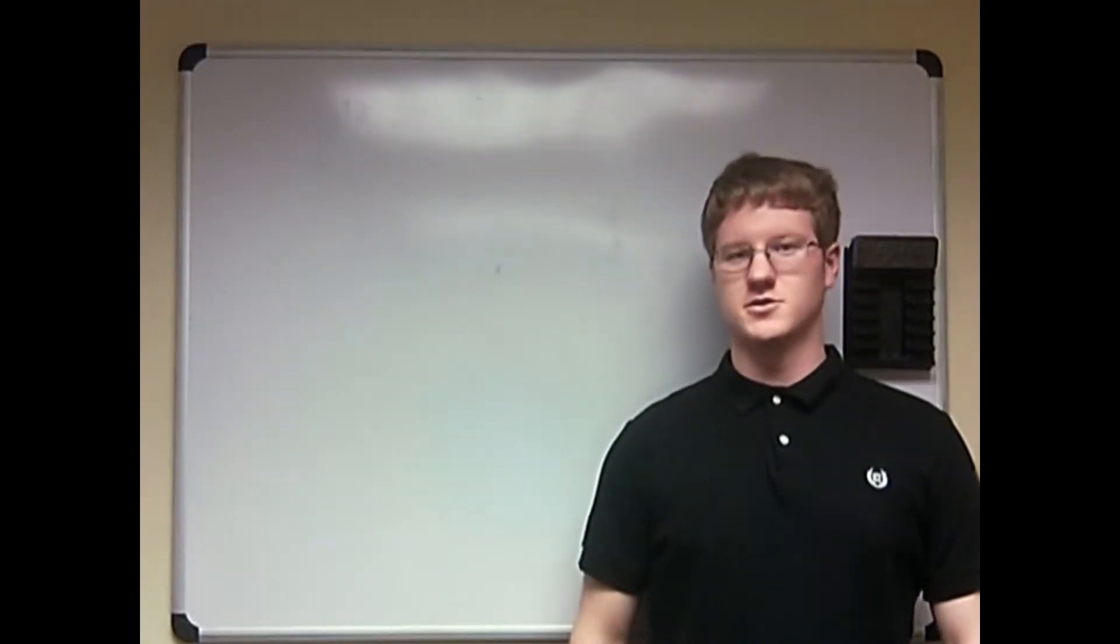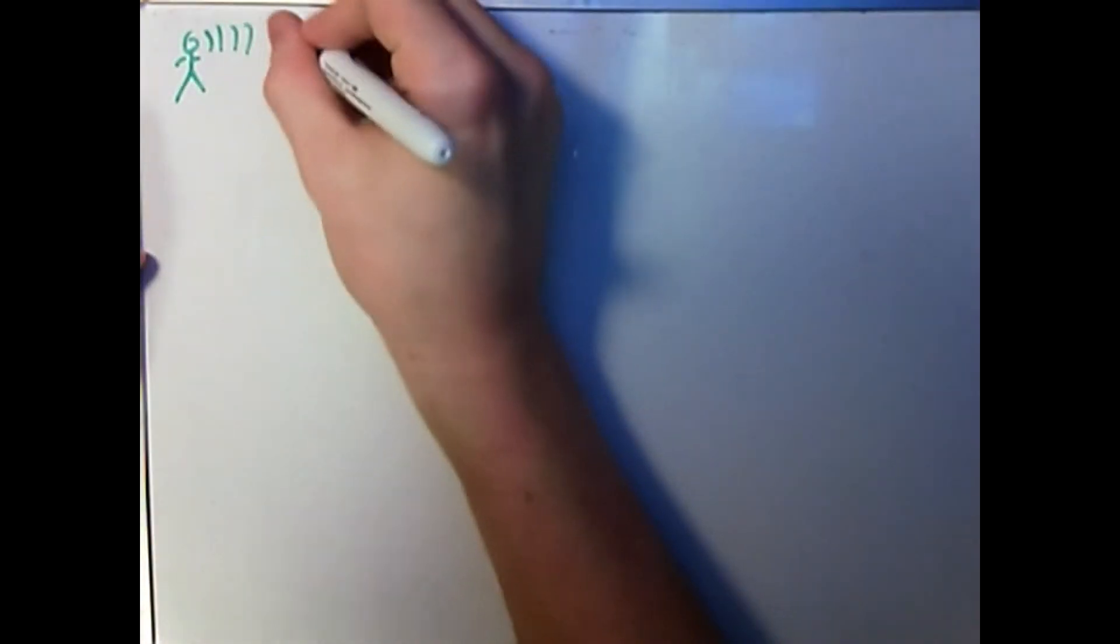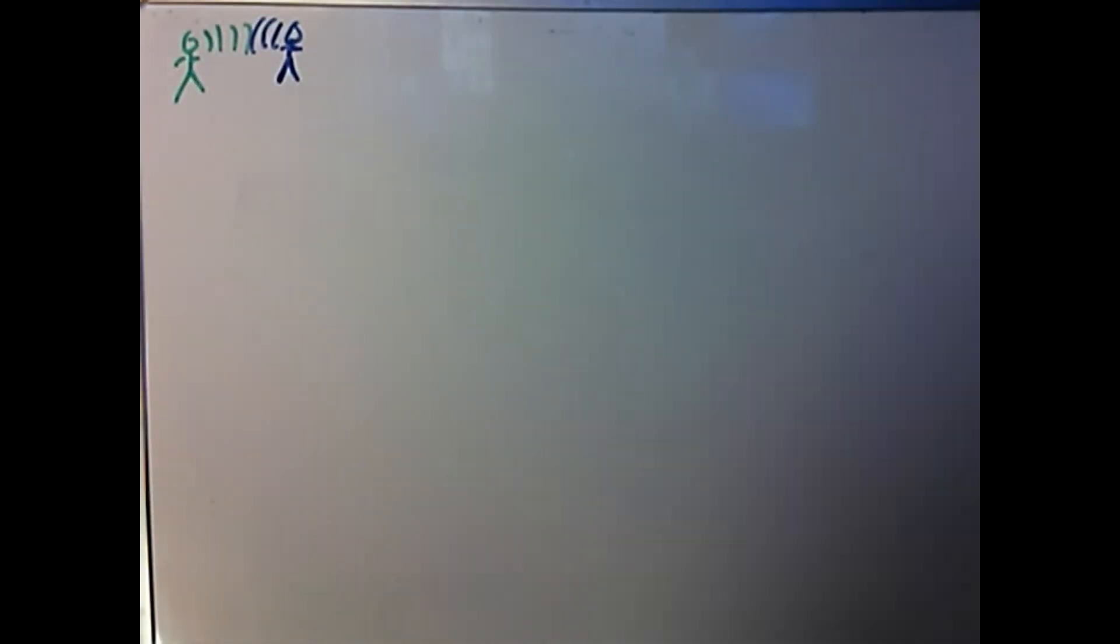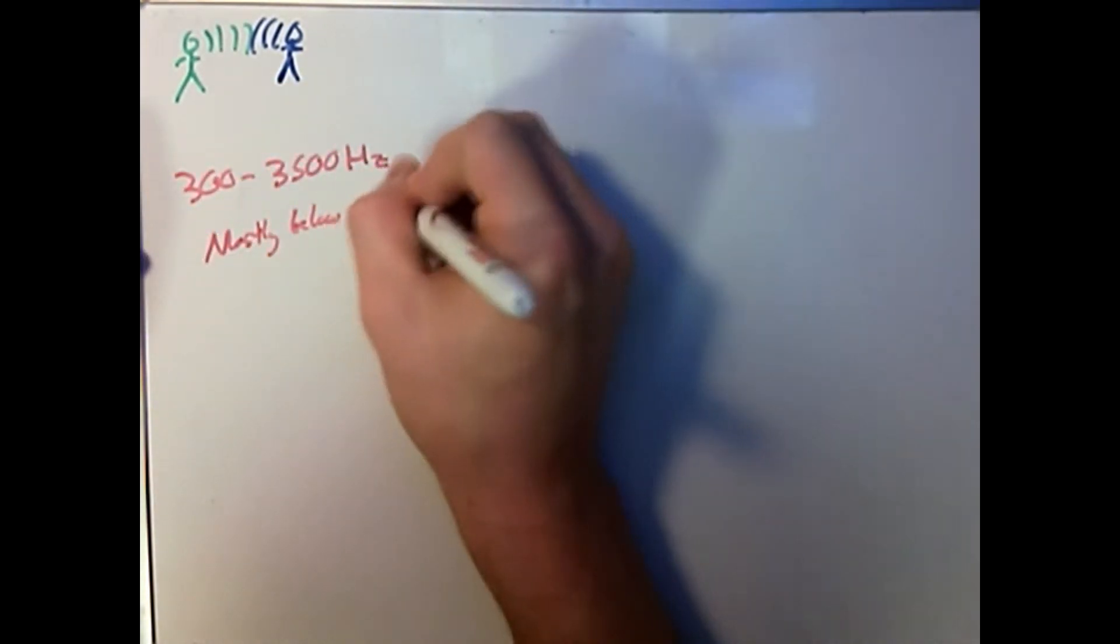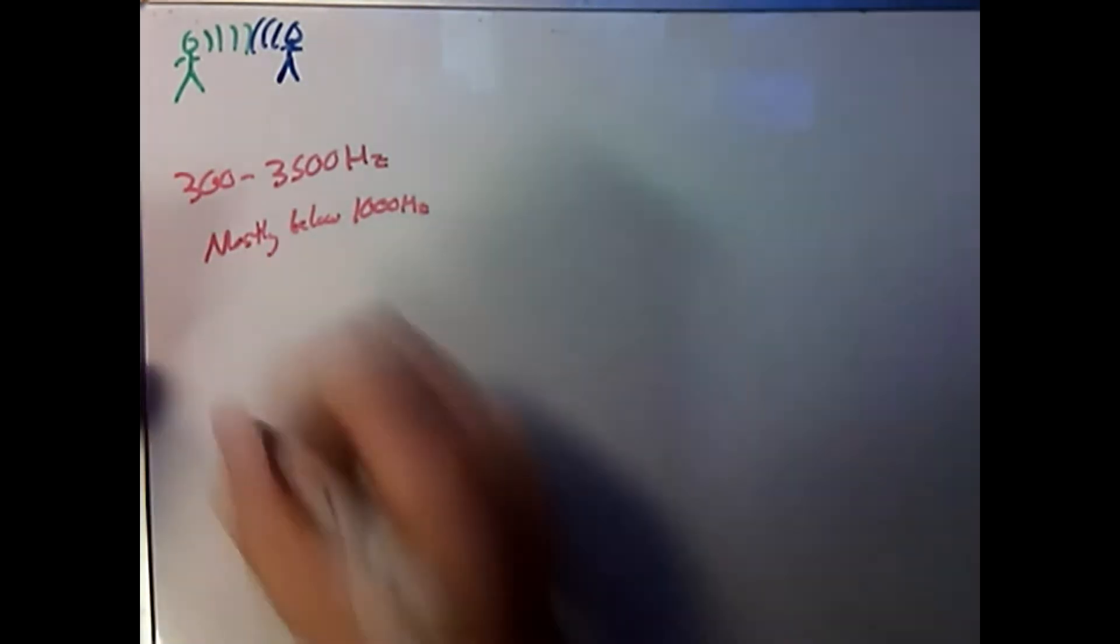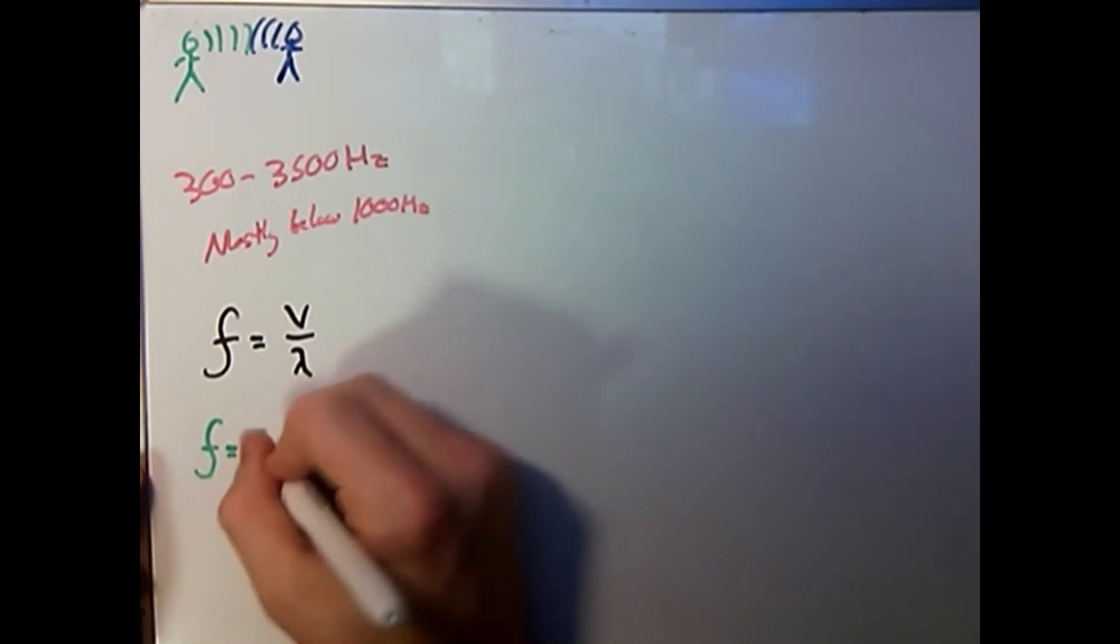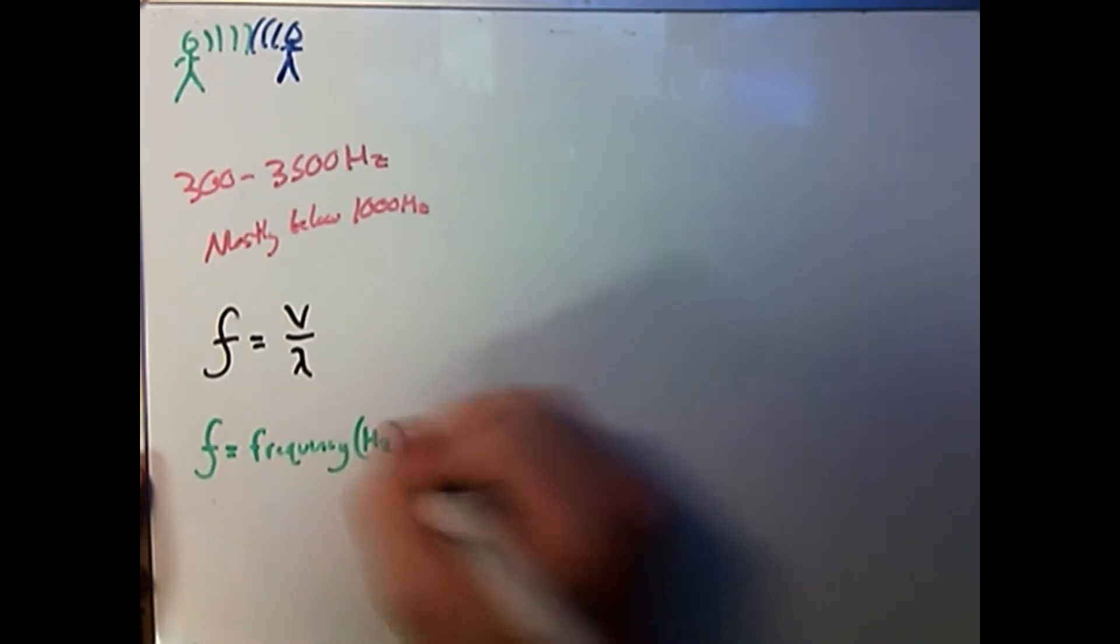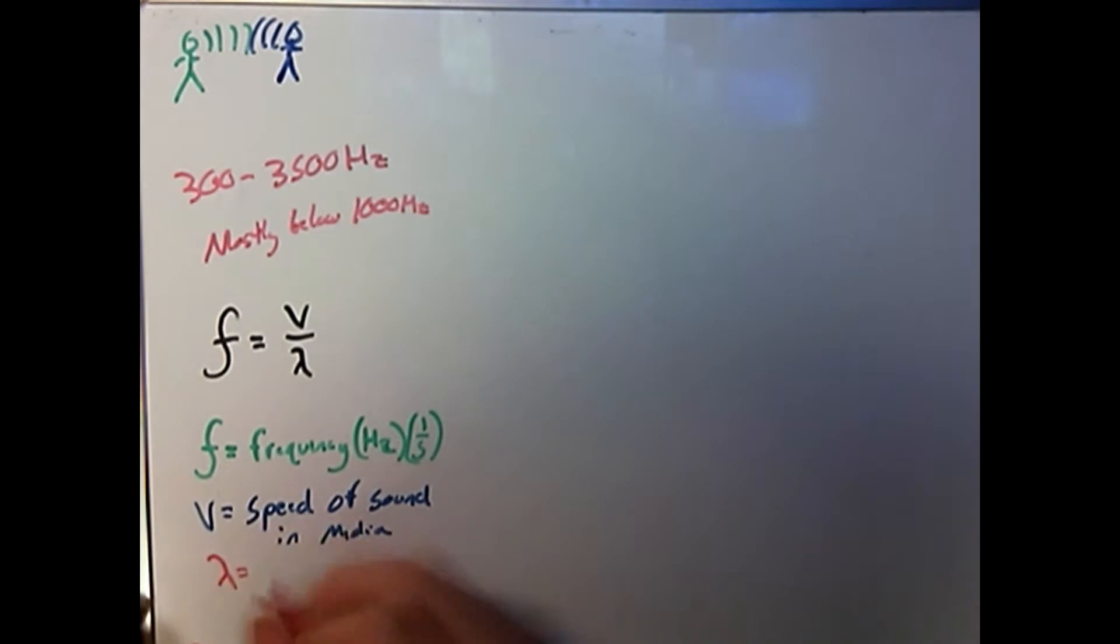So now we know the speed of sound traveling through air, let's take a look at what effect this has on our pitch. When you and your friends talk to each other, you usually use frequencies between around 300 Hz and 3500 Hz, with most of your frequencies falling well below the 1000 Hz line. If we look at the relationship between frequency and speed of sound, we see that it is given by three terms: F, the frequency in hertz, V, the speed of sound in meters per second, and lambda, the wavelength given in meters.